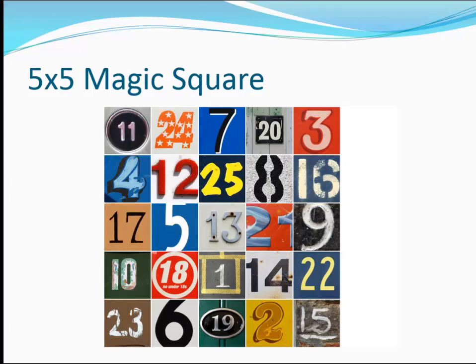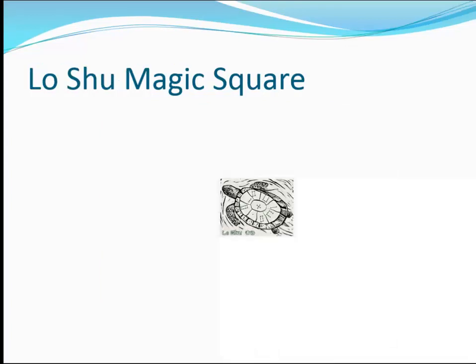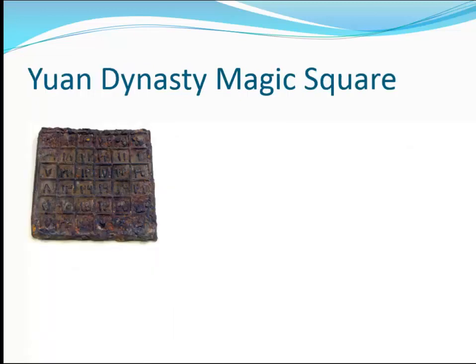Magic hypercubes are similar arrangements that extend into many dimensions and have the same magic sum property. Magic squares have been known since antiquity. The Lo Shu legend describes a turtle with the numbers for a magic square embedded on its shell. Physical representations of magic squares have been recorded as early as the Yuan dynasty in China.